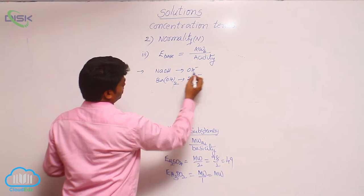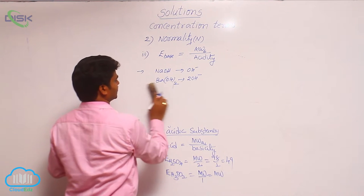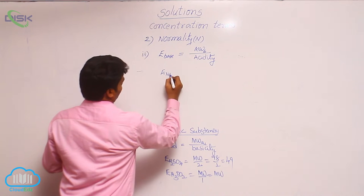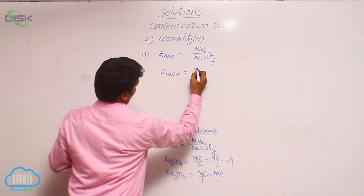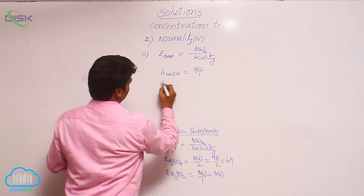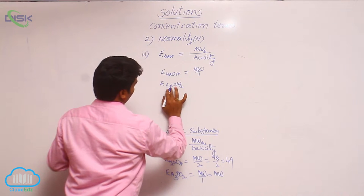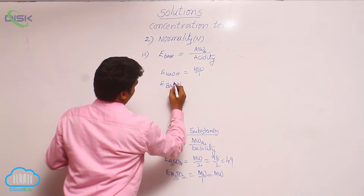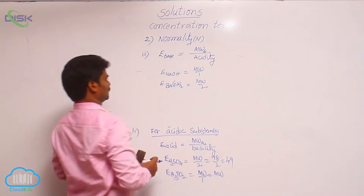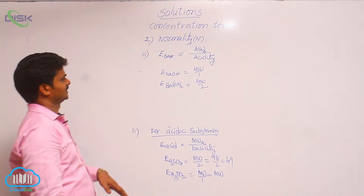If you take barium hydroxide, its acidity is 2 because it can give 2 OH⁻ ions. The equivalent weight of NaOH equals its molecular weight divided by 1. The equivalent weight of barium hydroxide equals its molecular weight divided by 2. In that way we find out the acidity of a base.